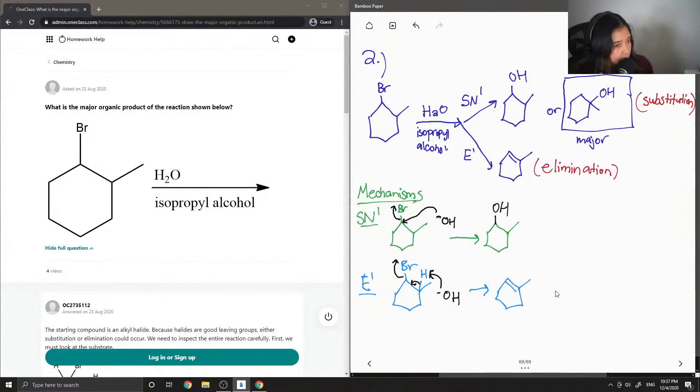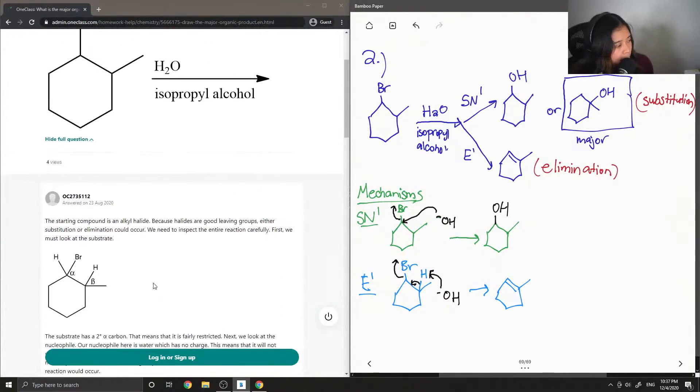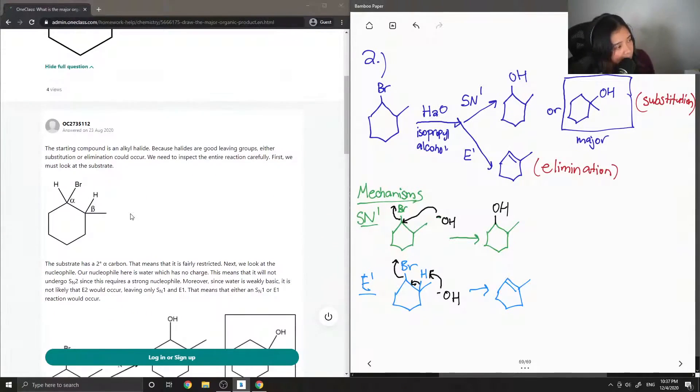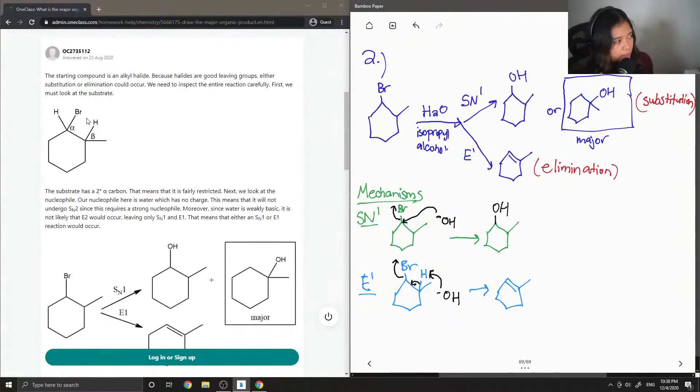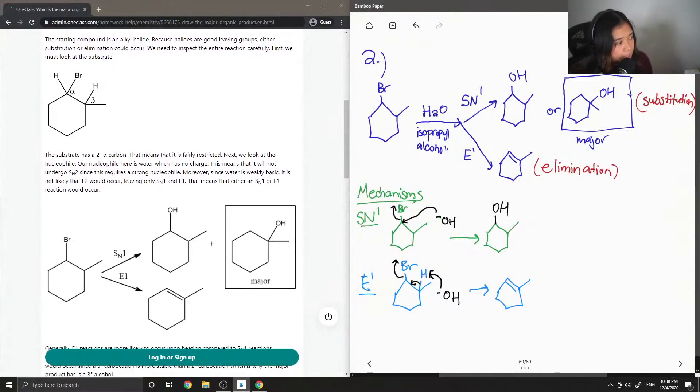Okay, so let's see what the junior tutor said. The starting compound is an alkyl halide. Because halides are good leaving groups, either substitution or elimination could occur. We need to inspect the entire reaction carefully. First, we must look at the substrate. The substrate has a 2 degree alpha carbon. This means that it is fairly restricted.